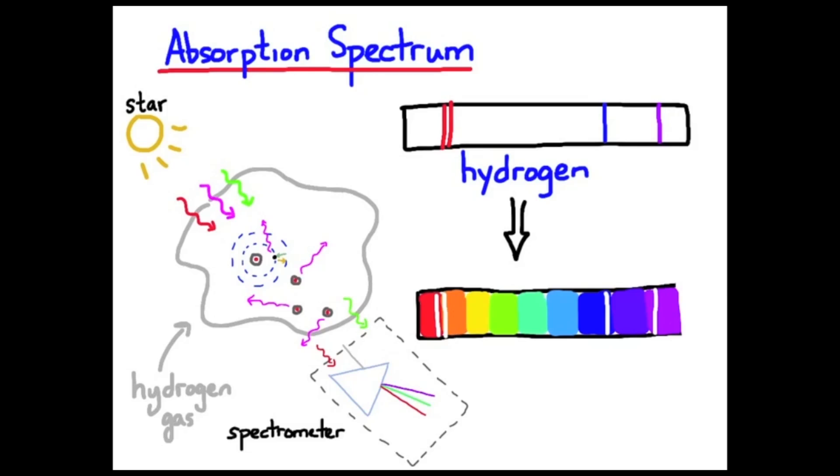Again, all of the elements in the periodic table have a unique absorption spectrum that matches the emission spectrum. It's all about where the light is coming from, whether it's an absorption or an emission spectrum.